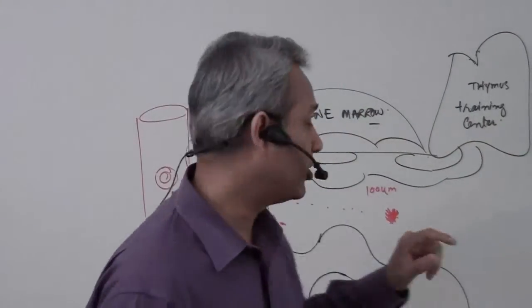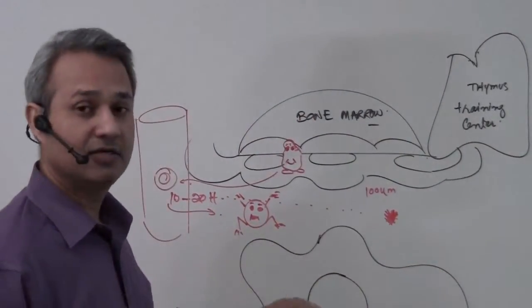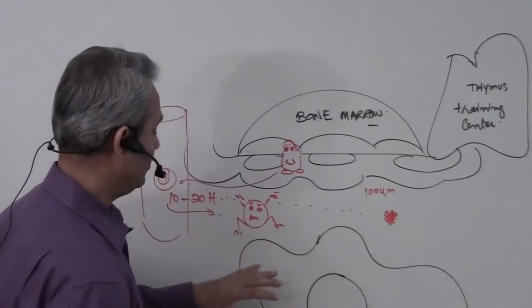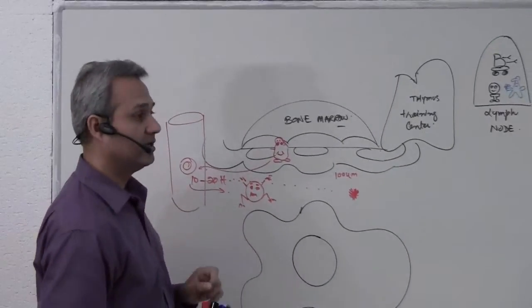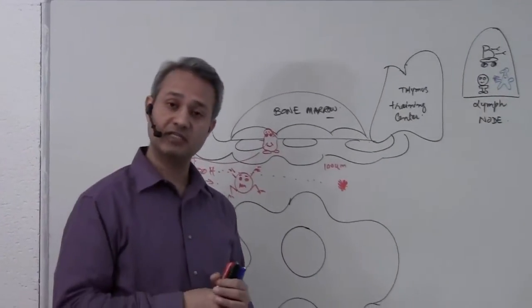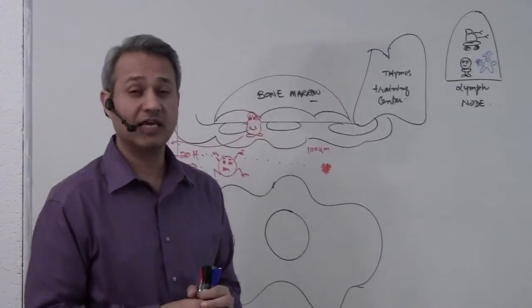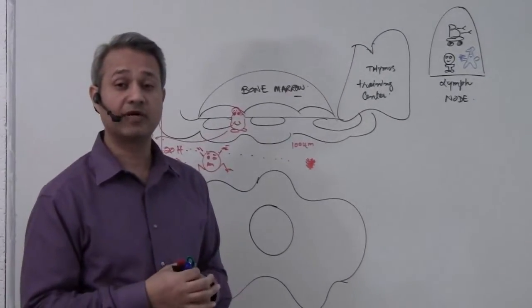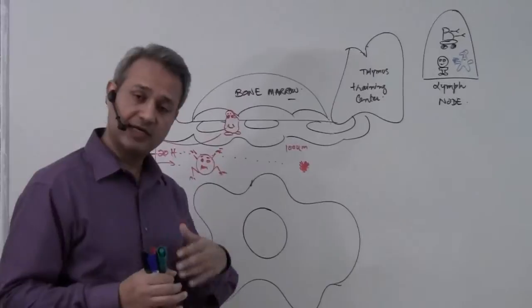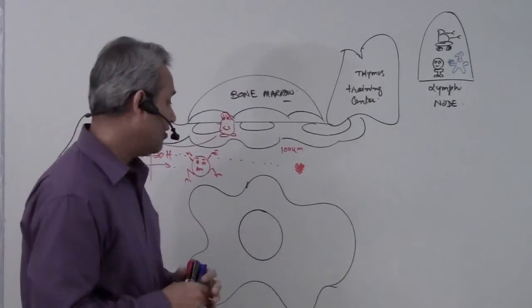So now, once a monocyte has come in, this is the monocyte, what would happen? So this monocyte came in, what would happen then? Now it is inside the tissue, it knows it came in due to a chemotactic factor, hopefully. It can come in otherwise as well. What is it going to do?